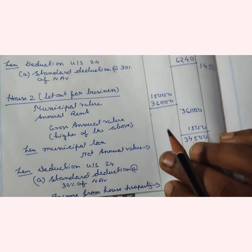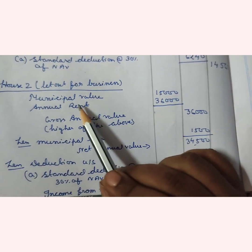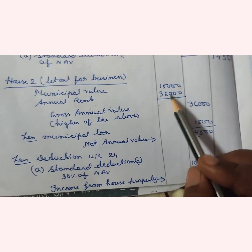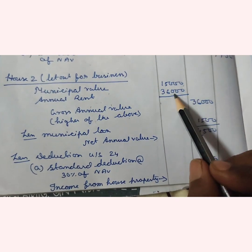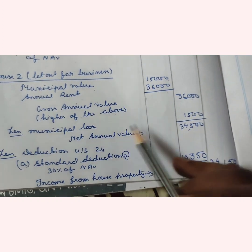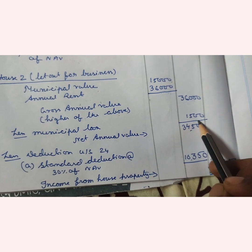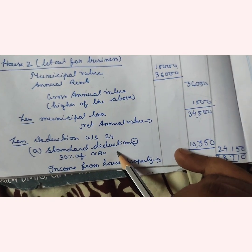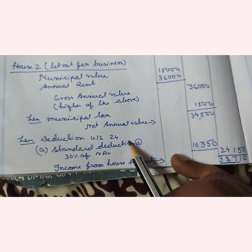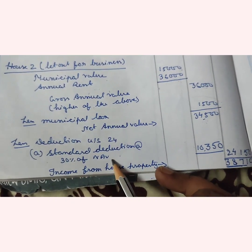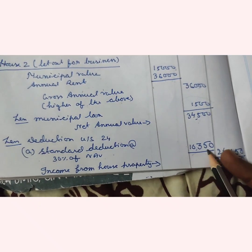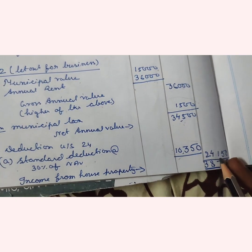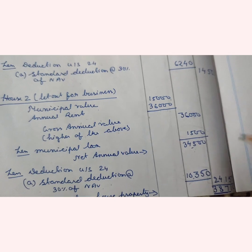House 2 is let out for business. Municipal value given is ₹15,000. Rent received equals annual rent of ₹36,000 because there is no vacancy. Comparing these two, gross annual value is the higher of the two: ₹36,000. Municipal tax of ₹1,500 is deducted, giving net annual value (NAV) of ₹34,500. Standard deduction under Section 24(a) at 30% of NAV: 30% of ₹34,500 is ₹10,350. Deducting ₹10,350 from ₹34,500, income from House 2 is ₹24,150. No interest on loan is given here either.